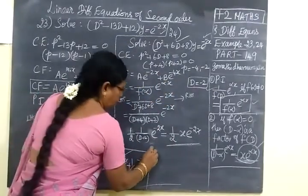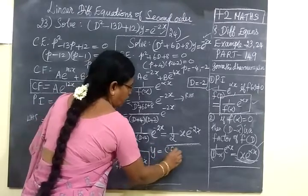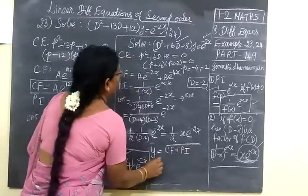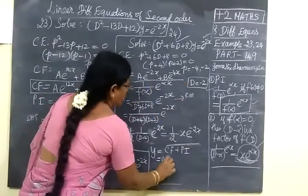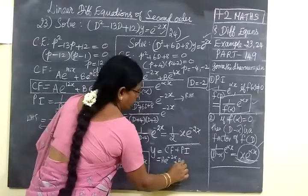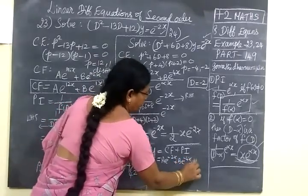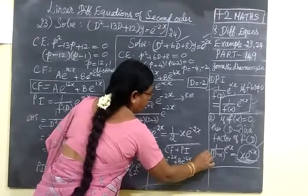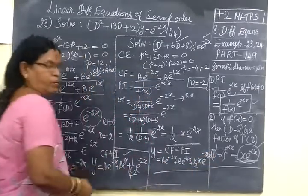So the solution y equals complementary function plus particular integral. The complementary function is a e power minus 4x plus b e power minus 2x, plus the particular integral 1 by 2, x e power minus 2x. It is very simple.